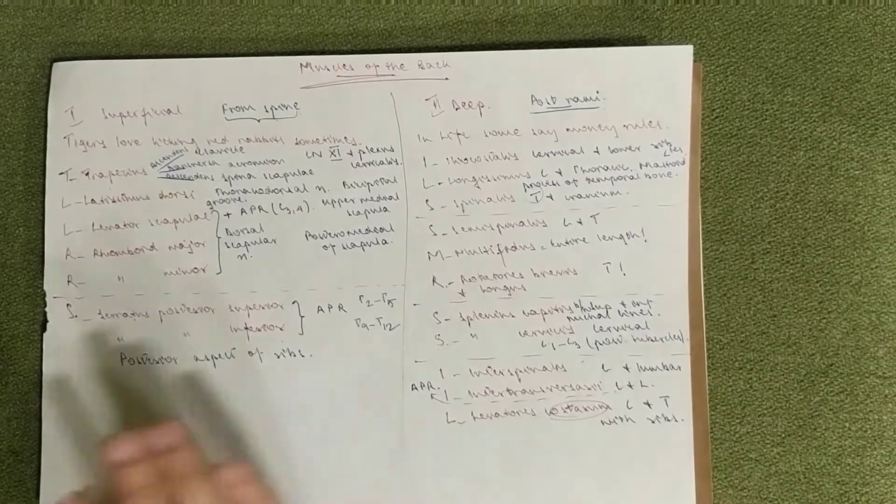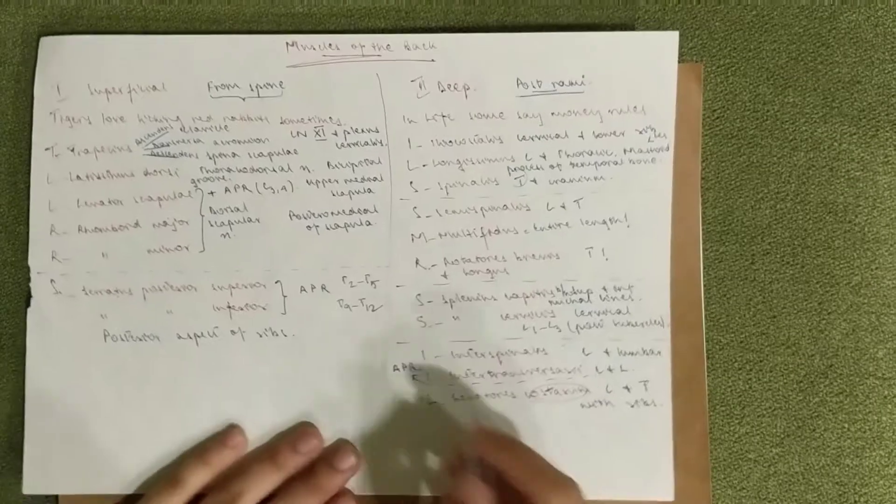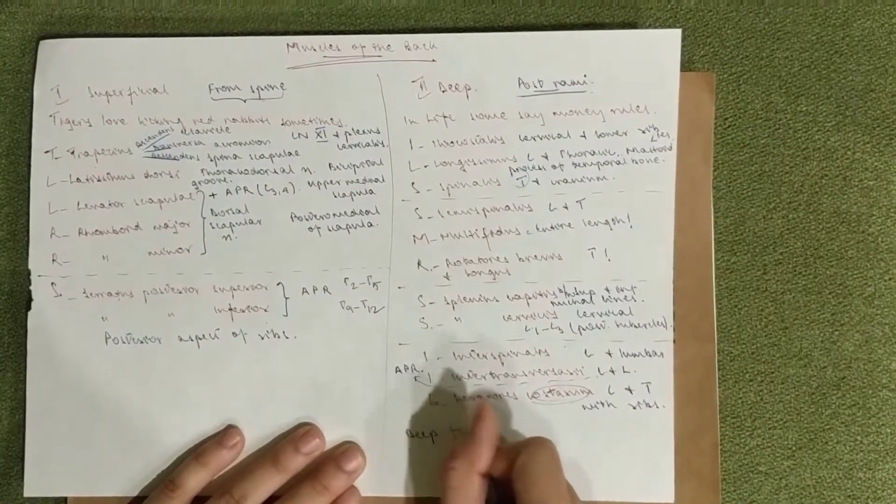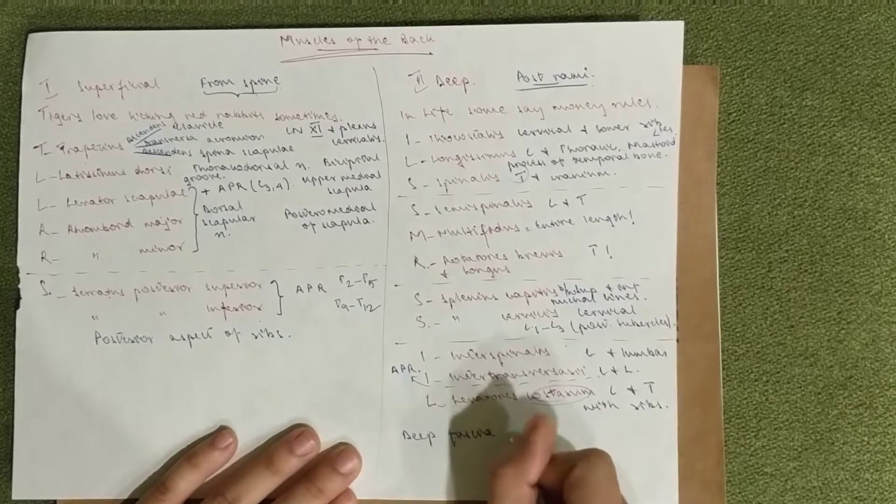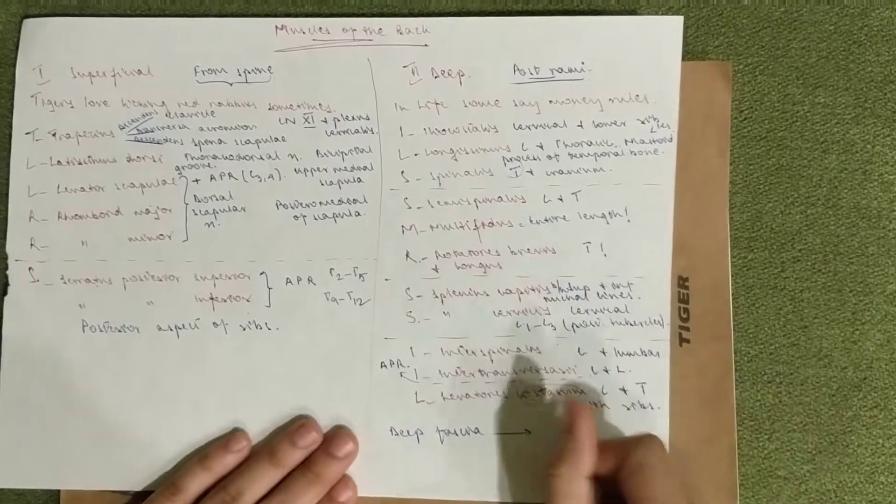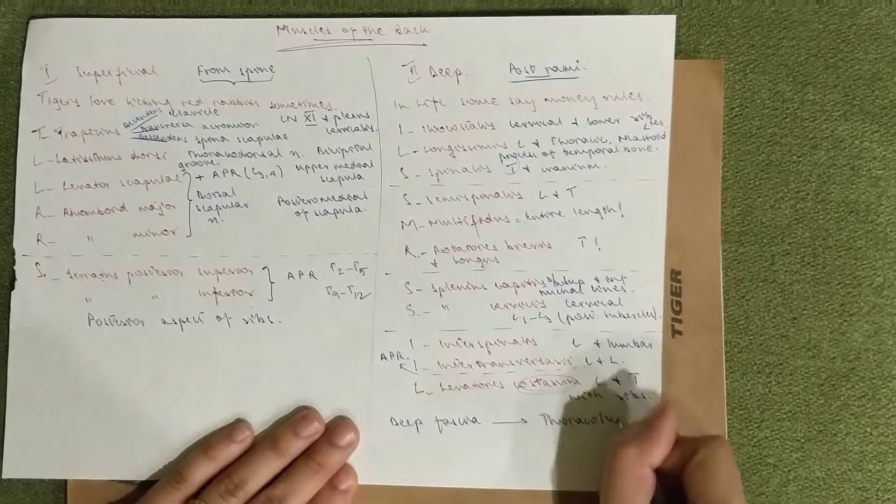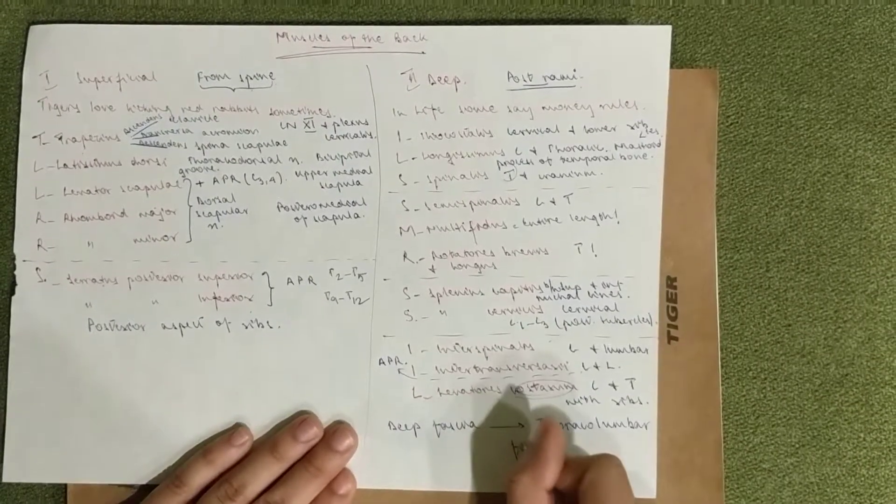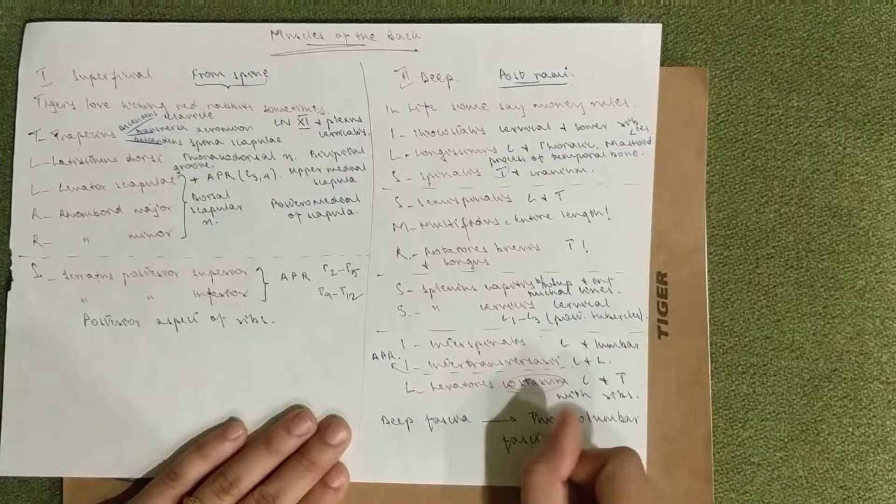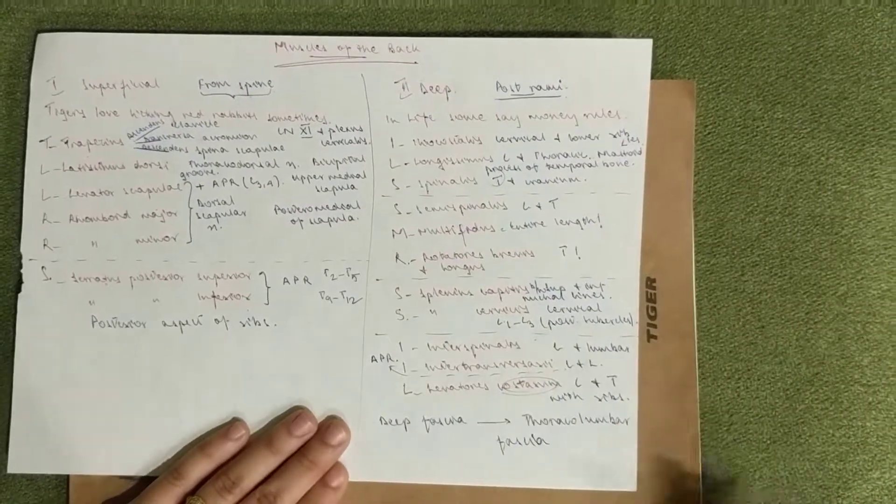The muscles of the back are covered by a deep fascia, under which you have the investing layer of the deep fascia, which is the thoracolumbar fascia. It is continuous with the nuchal fascia.